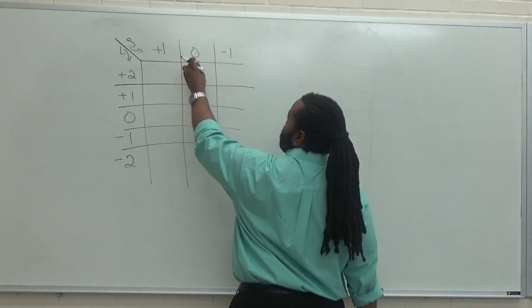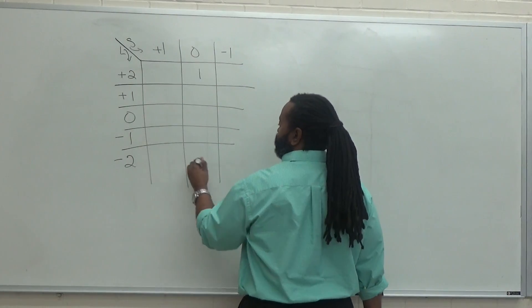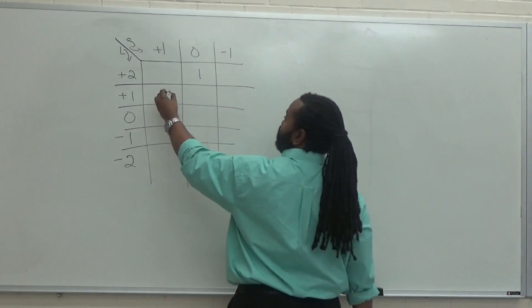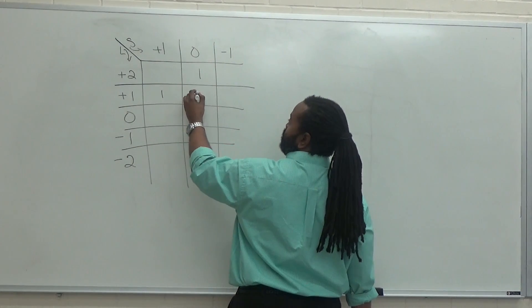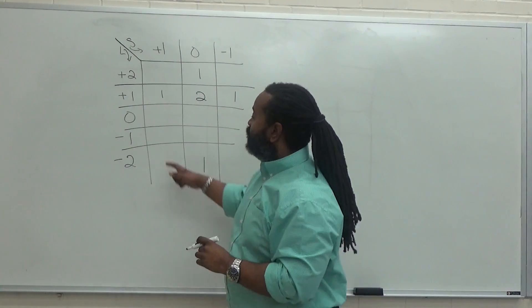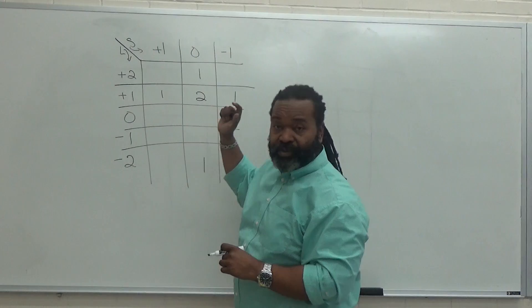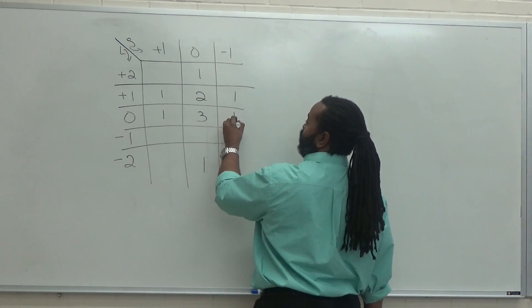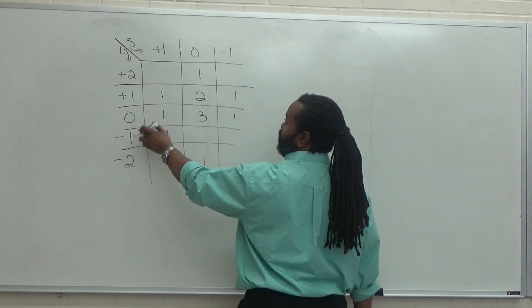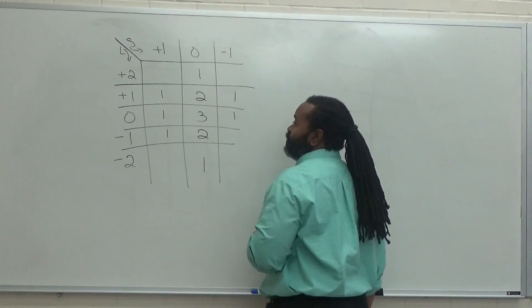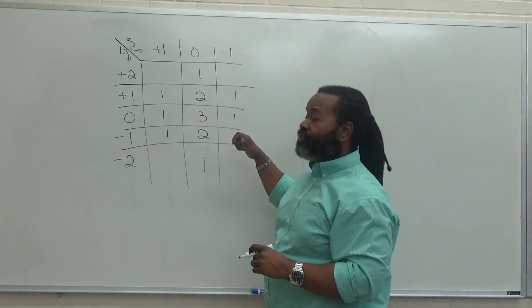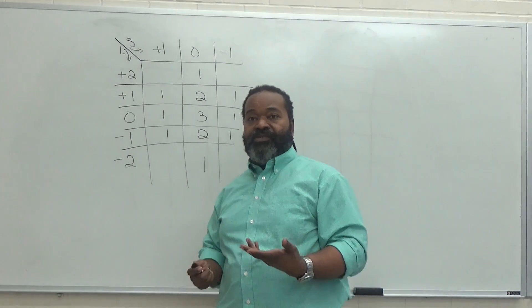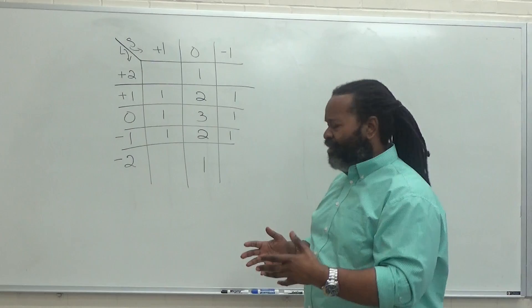Well, we had one way that we could get S being zero and have an L of plus two. Same for minus two. For an S of plus one and an L of plus one, we had one way we could do that. We had two ways for S to be zero and L to be plus one, and one way here. So that completes writing out the table. So the next thing we have to do is actually figure out what all the terms are and how we would separate them.